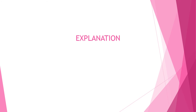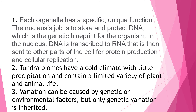Explanation 1: Each organelle has a specific unique function. The nucleus stores and protects DNA, which is the genetic blueprint for the organism. DNA is transcribed to RNA, which is then sent to other parts of the cell for protein production and cellular respiration. Explanation 2: Tundra biomes have a cold climate with little precipitation and contain a limited variety of plant and animal life.